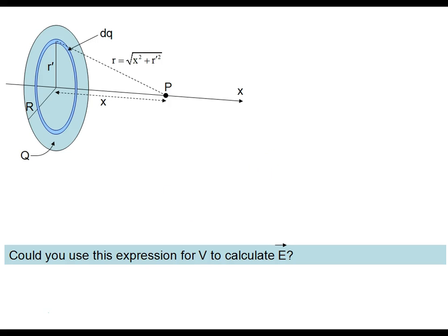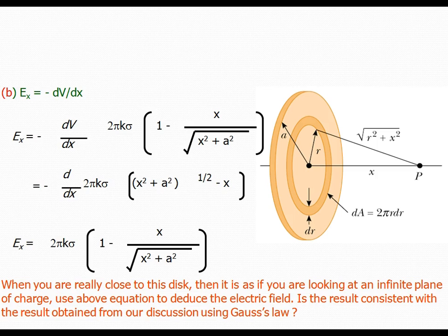Could you use this expression for the potential which you derived right now to calculate the electric field? The hint is E equals minus dV by dx. Yes, you will get it — so please read and solve it.